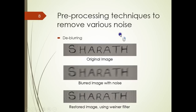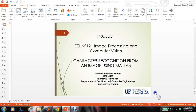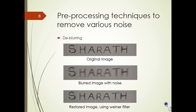Talking about preprocessing techniques to remove various noises: de-blurring. De-blurring is a technique used when the image is blurred. Generally, the image blurs when the image is captured in motion — either the image is moving or the camera capturing the image is moving. Suppose the original image is clear; this is the effect of capturing an image while either the camera or the image is moving — this is how the blurred image could look.